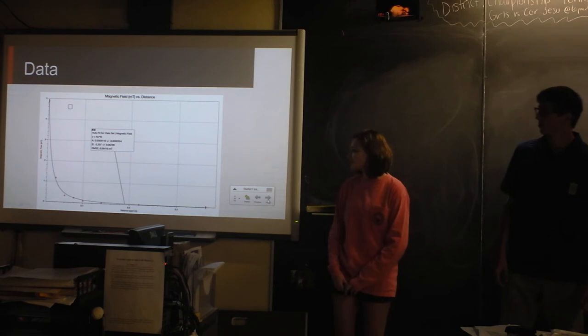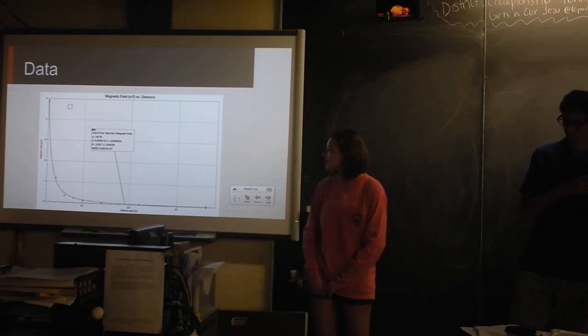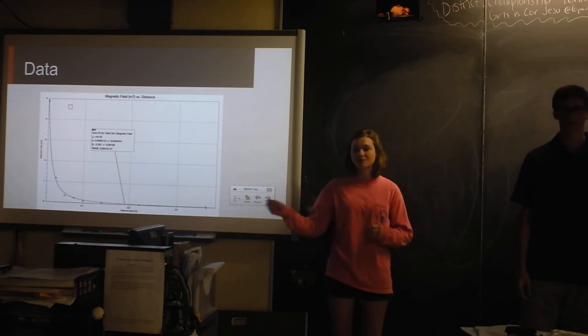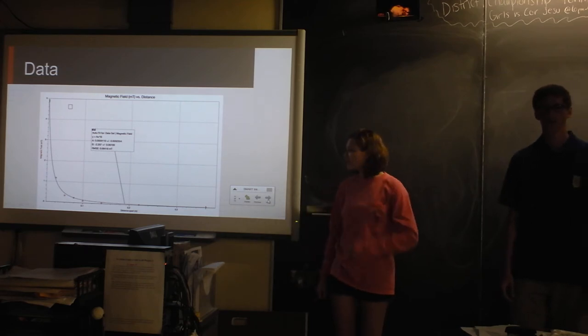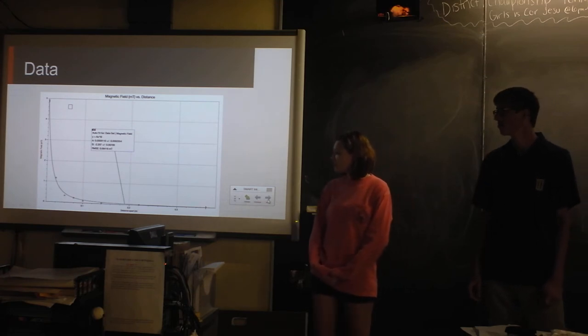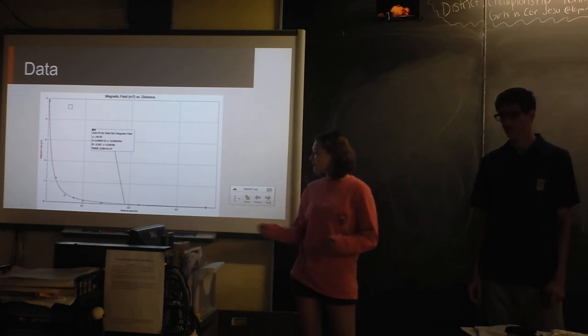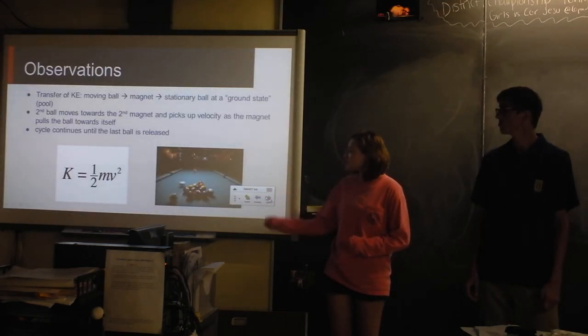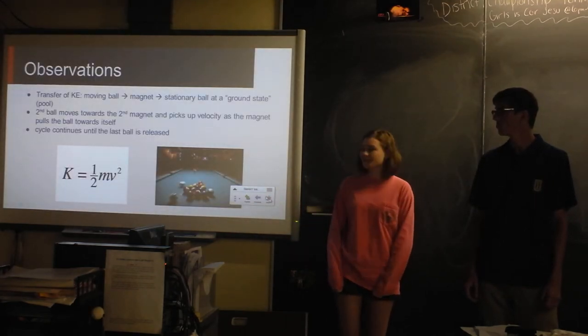And so this is the last thing that we tested. We tested the magnetic field versus the distance, the separation from the B field sensor. And so it's an inverse relationship where when we increase the separation, the magnetic field decreases.